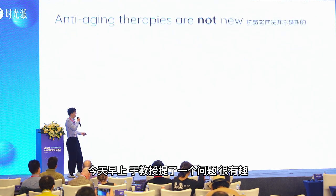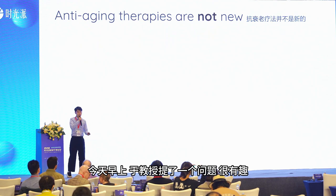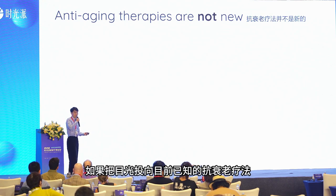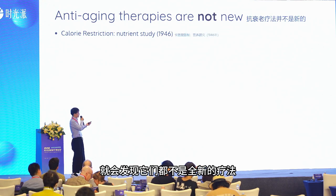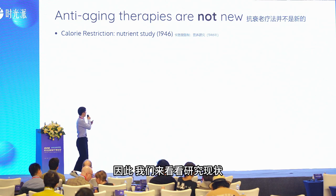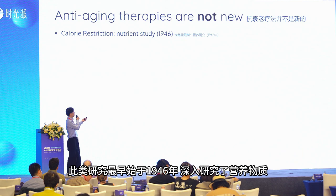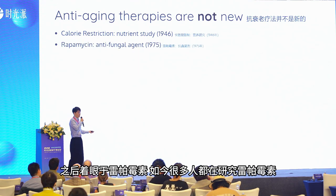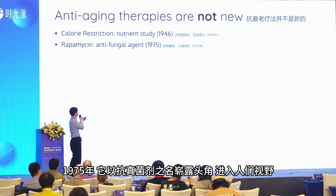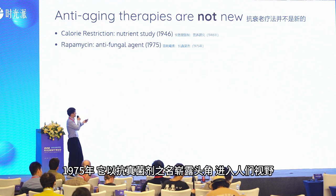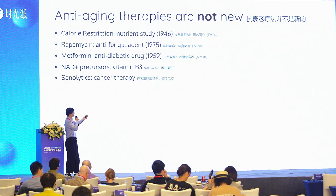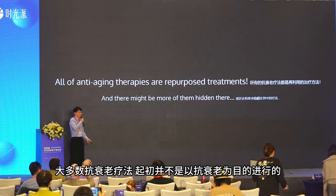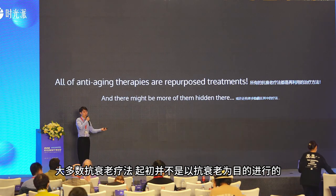Earlier today, Dr. Yu gave a very interesting question: what's your favorite anti-aging therapy? If you think about current known anti-aging therapies, you will notice they're actually not novel. Caloric restriction was first studied in 1946 for studying nutrients, and rapamycin was first introduced as an antifungal agent in 1975. Most anti-aging therapies were already studied for something else, a while ago.